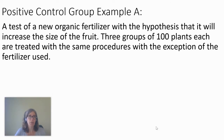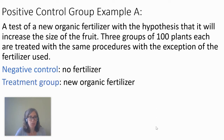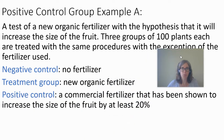First example: a test for a new organic fertilizer with the hypothesis that it will increase the size of fruit. You're going to have three groups of 100 plants each, all treated with the same procedures with the exception of the fertilizer used. The negative control would be no fertilizer — that's when you pull something out. A negative control group, you're always pulling something out; in this case, it's fertilizer. The experimental group is going to be some new organic fertilizer that you're curious about. And then your positive control group is some commercial fertilizer that's been shown to produce some particular benefit.